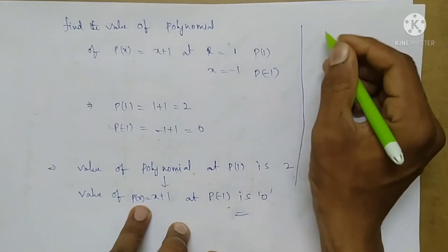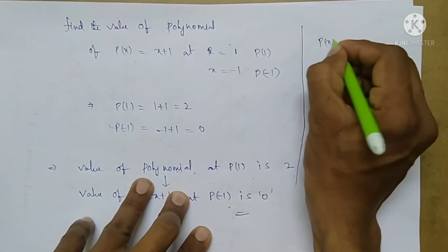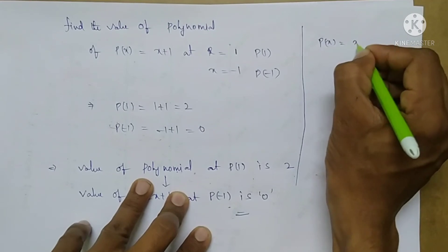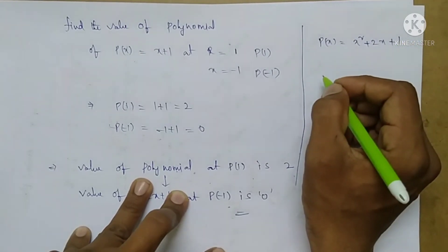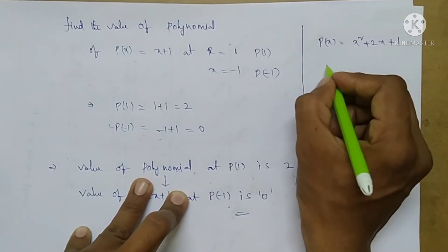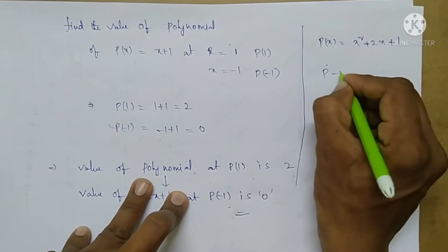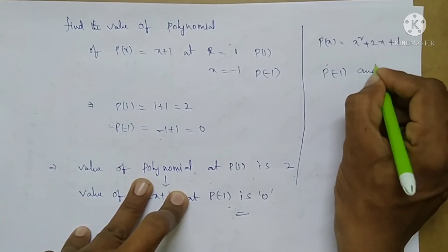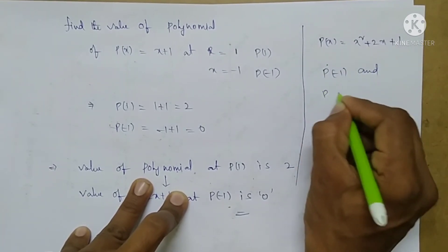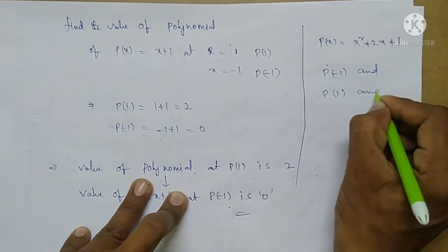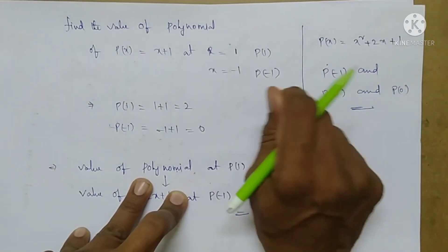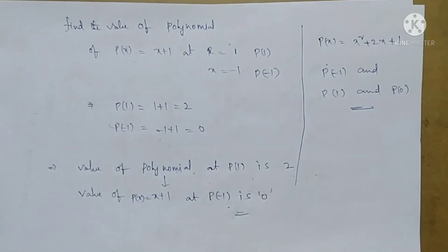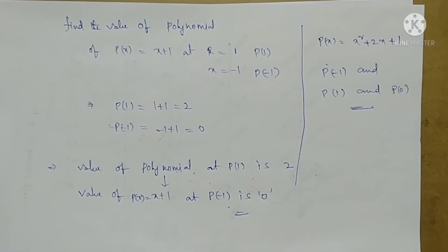This is your practice question for homework: P of x equals x square plus 2x plus 1. Find the value of the given polynomial at P of minus 1, P of 1, and P of 0. If you have any doubts in this session, please contact my number. Thank you and have a good day.